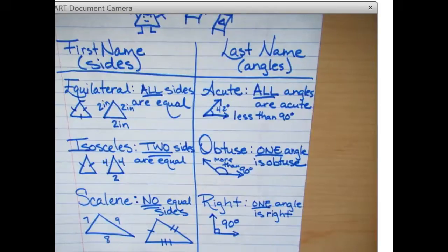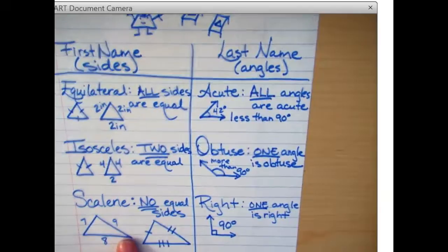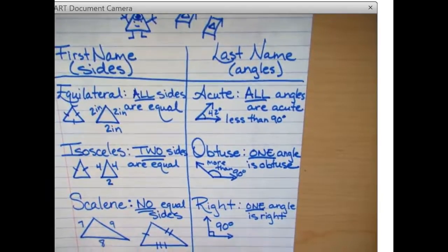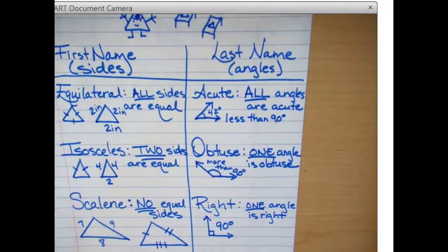So you have a first name and a last name. Every triangle is going to have one. You look at the sides to classify your first name. And then you look at the angles for the last name.